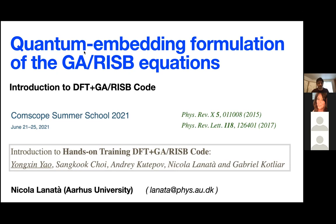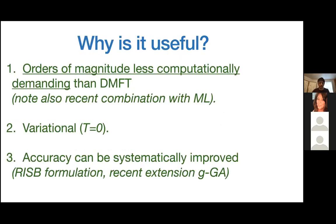This is going to be formulated as a quantum embedding theory. Before getting into how the theory works and into formal things, let me say a few words about why it is useful. You have already learned about different methods in mean-field theory and different extensions of it, so why should one also learn this particular method?